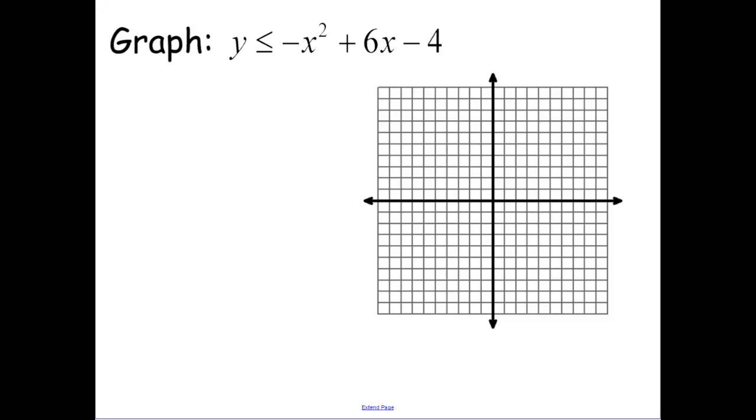So graphing this first one, remember to find your vertex. It's negative b over 2a. So I have a negative 6 over 2 times by a negative 1, which is going to be a 3. So the x coordinate is 3.